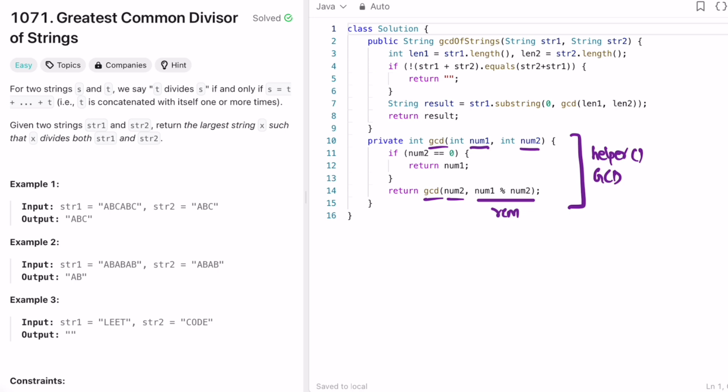So this helper function will give you the GCD and I'm calling this helper function inside the main function. So inside the main function I'm finding out length one, length of string one, and length of string two. Here I'm doing a base check: if when you combine both the strings and if they're not same you return an empty string.